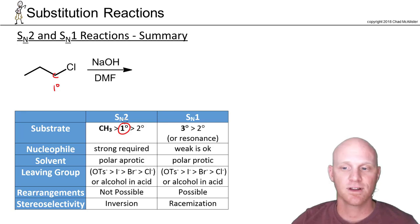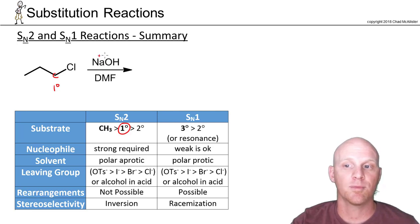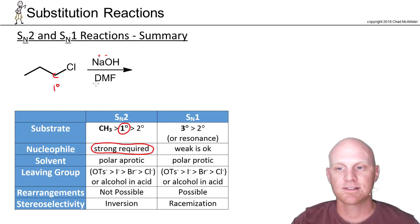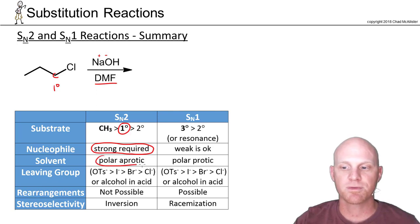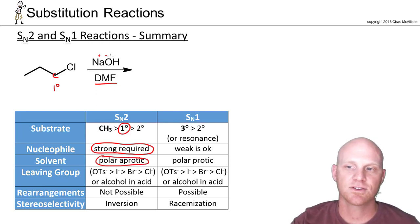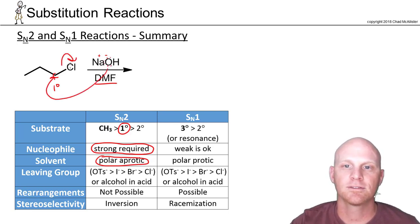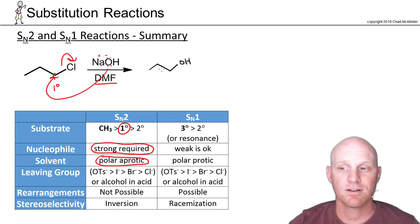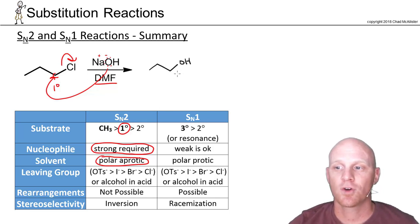It's going to be an SN2 reaction. Sodium hydroxide — sodium is a metal, oxygen a nonmetal, so it's ionic — hydroxide has a negative charge and is definitely a strong nucleophile, which we needed for SN2. DMF is one of your polar aprotic solvents, so everything lines up for SN2. The hydroxide ion does backside attack and kicks off the chlorine, leaving the OH replacing the chlorine. We did not form a chiral center, so we get one achiral product: 1-propanol.